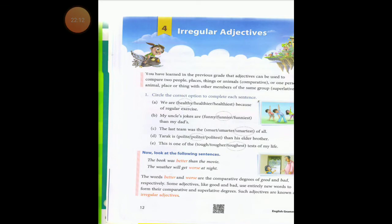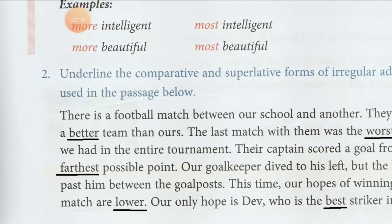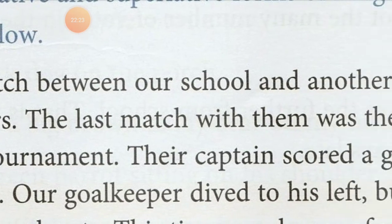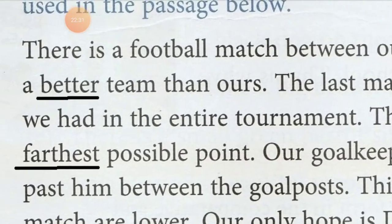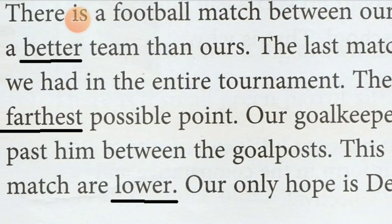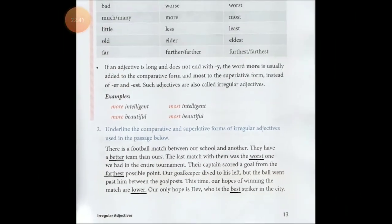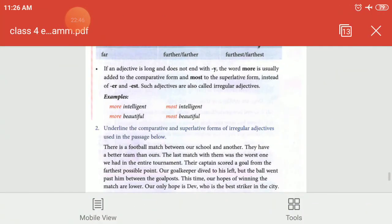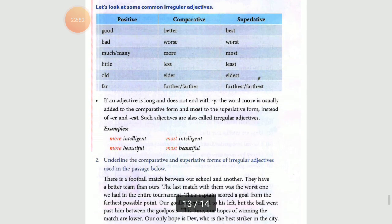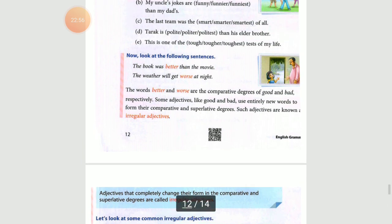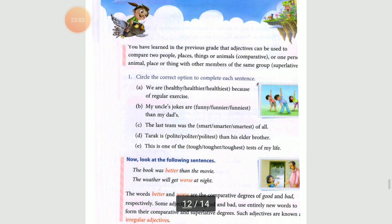For page number 13, the words to underline in the passage are: better, worst, farthest, lower, and best. Aapko yeh chart yaad karna hai, activity 2 ko acche se dekhna hai, irregular adjectives ki definition yaad karni hai, aur activity 1 ko bhi acche se padhna hai. I hope you liked the video. Thank you for watching.